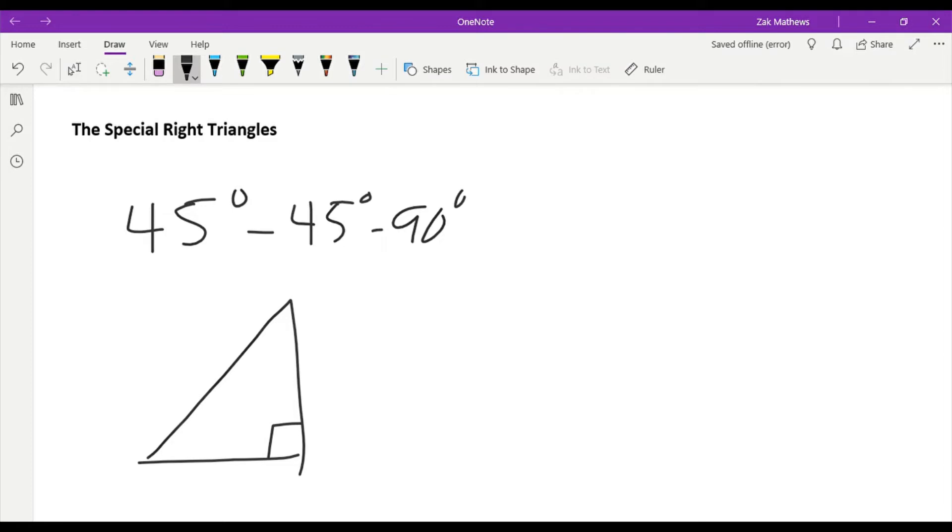These should be the same size. And that's the key to this triangle. That's why we know exactly what these ratios are going to be. If these two angles are both 45 that means that this is an isosceles triangle, meaning that two of the sides are the same because the two angles are the same.